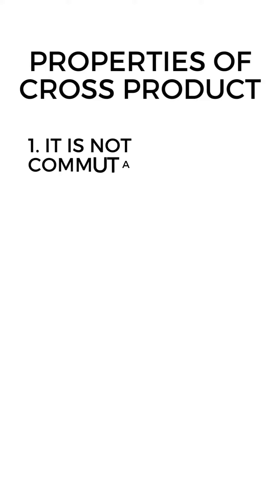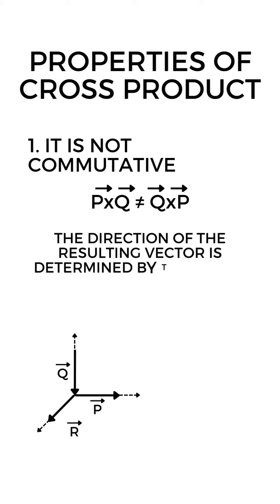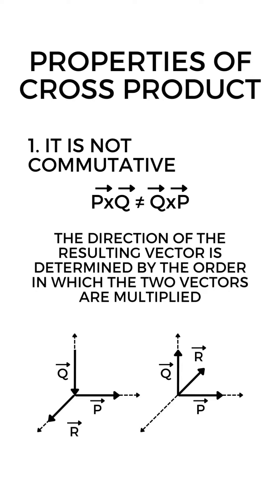The cross product has several important properties. First, it is not commutative, meaning that P cross Q is not equal to Q cross P. Instead, the direction of the resulting vector is determined by the order in which the two vectors are multiplied.